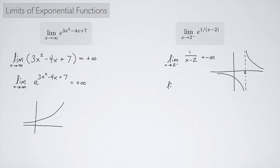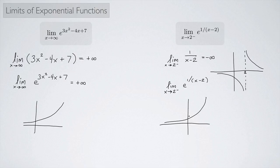Now we look at the original limit: the limit as x approaches 2 from the left of e to the 1 over x minus 2. The exponent is going to negative infinity. Recalling the graph of e to the x, as we go to negative infinity the function approaches 0. And in fact, that is the answer — the limit equals 0.